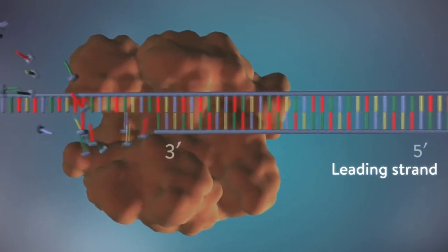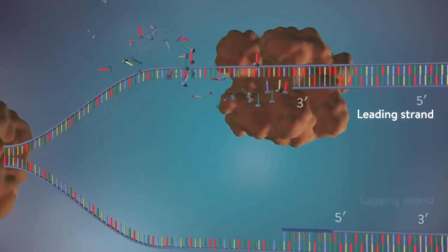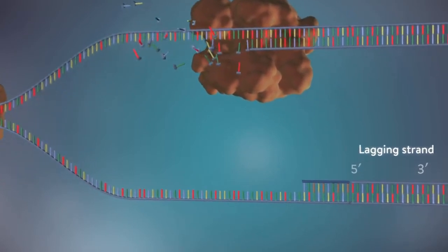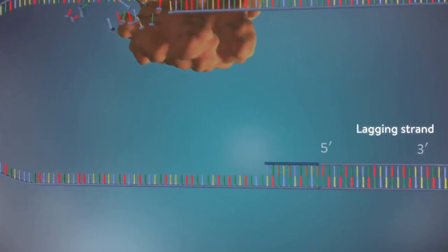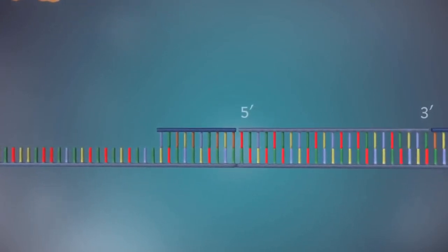The other strand, the lagging strand, cannot be made in this continuous way because it runs in the opposite direction. The DNA polymerase can therefore only make this strand in a series of small chunks, called Okazaki fragments.